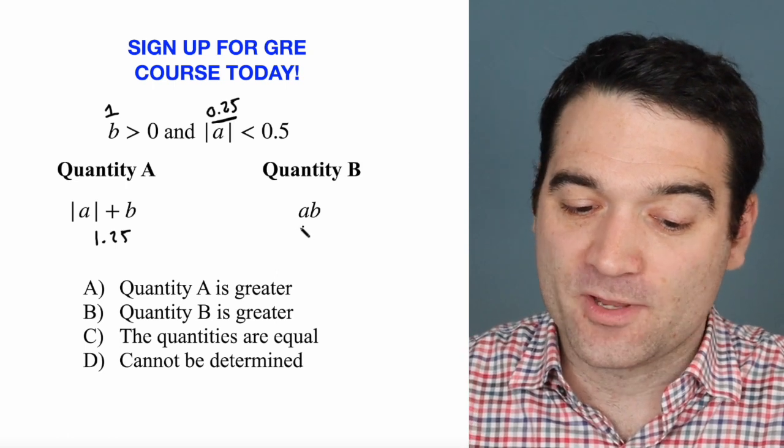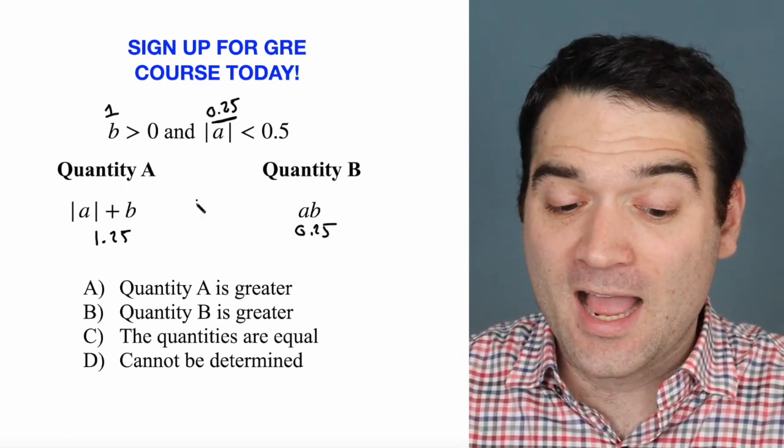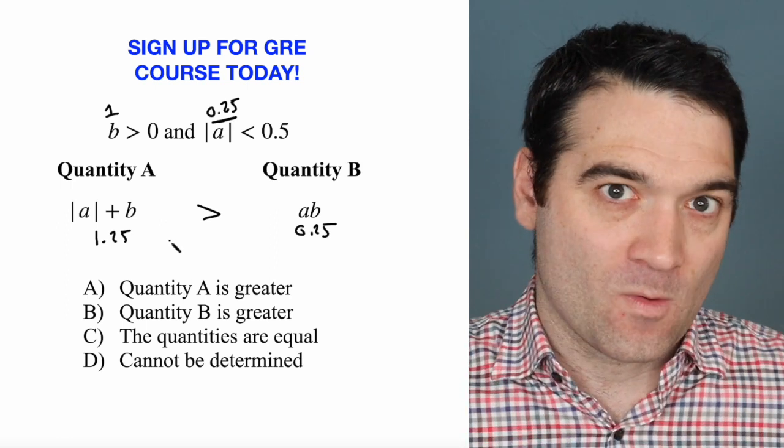And over here, it's 1 times 0.25, so 0.25. Okay, I have one case where quantity A is greater than quantity B.